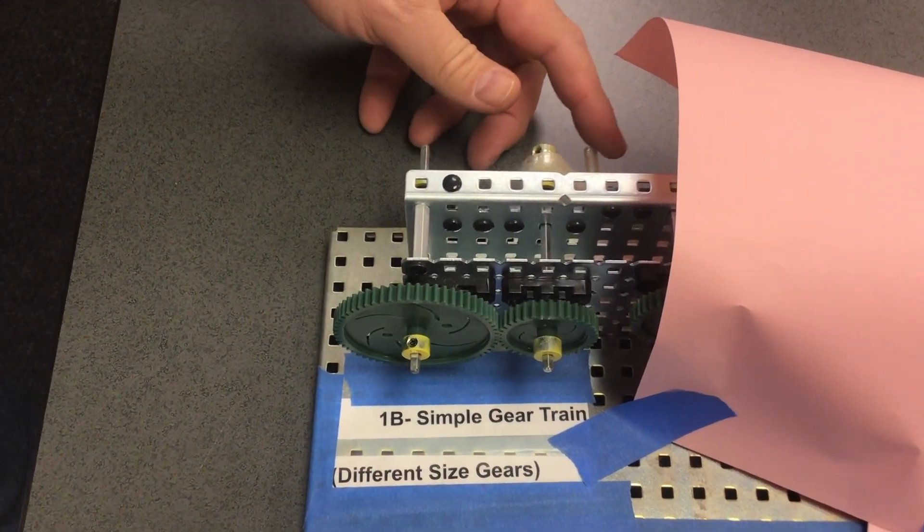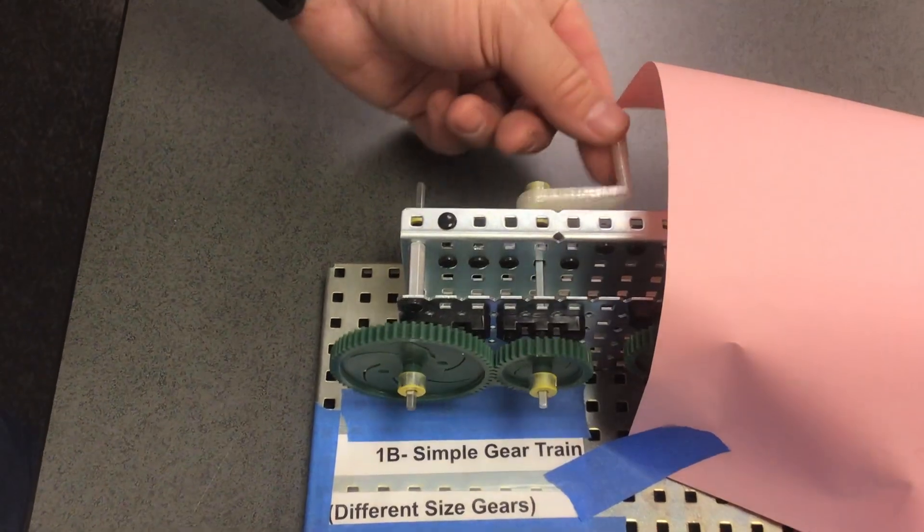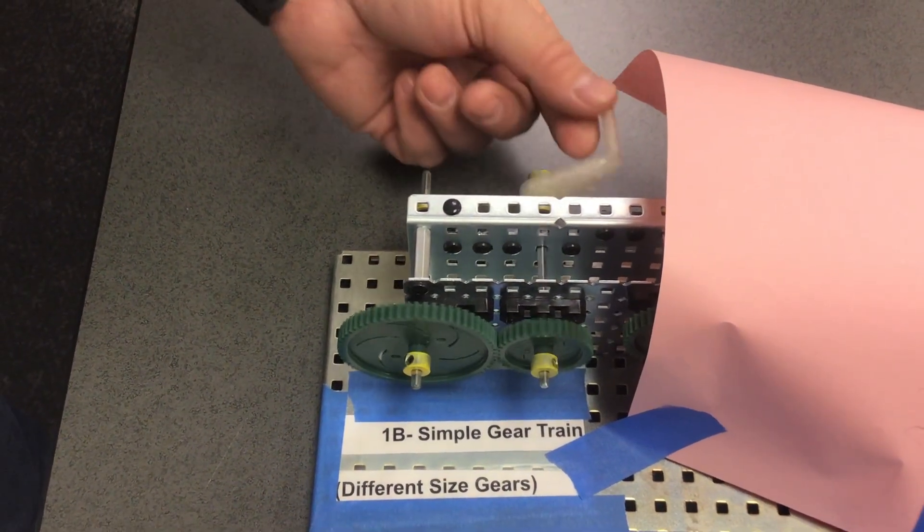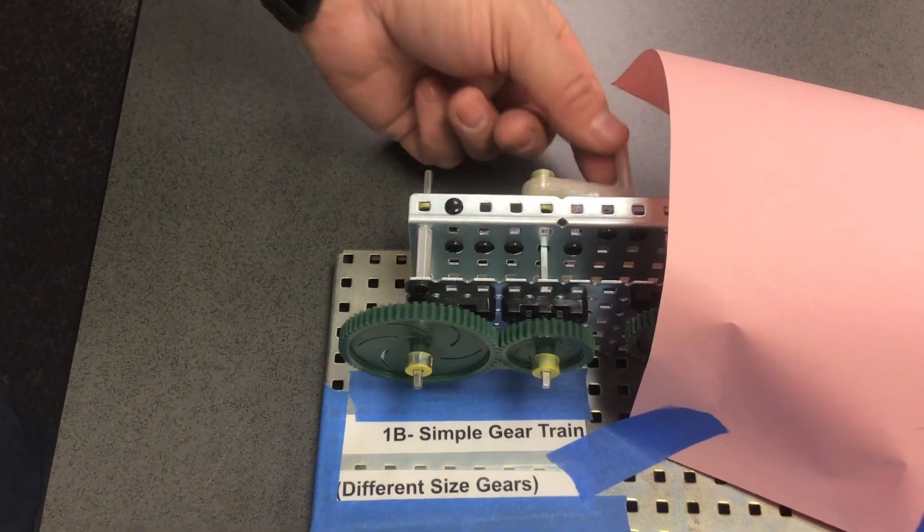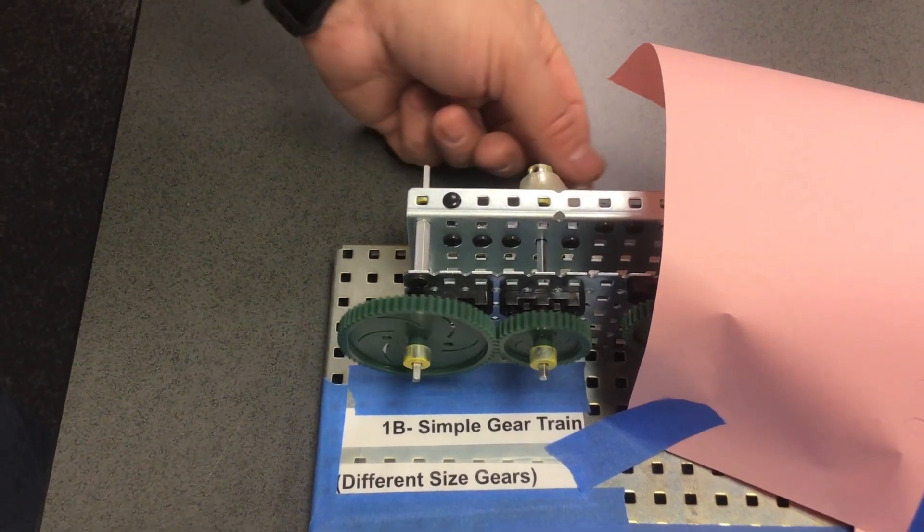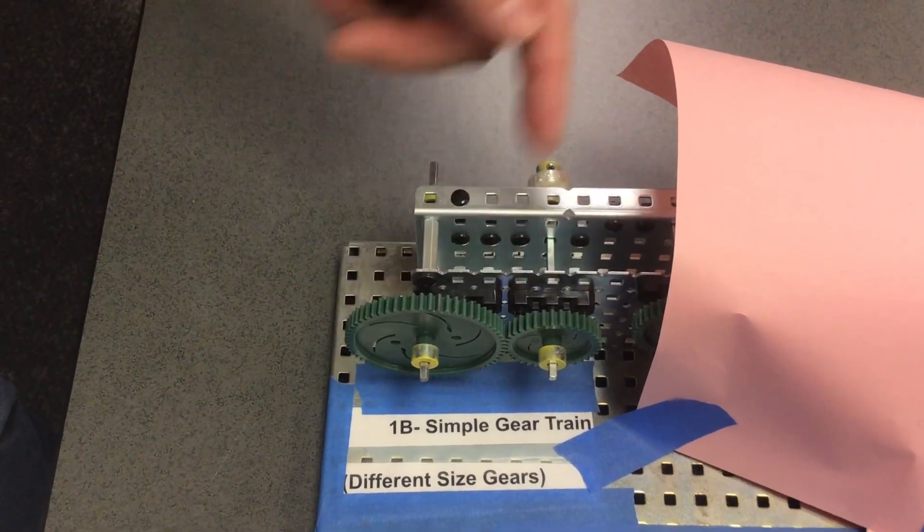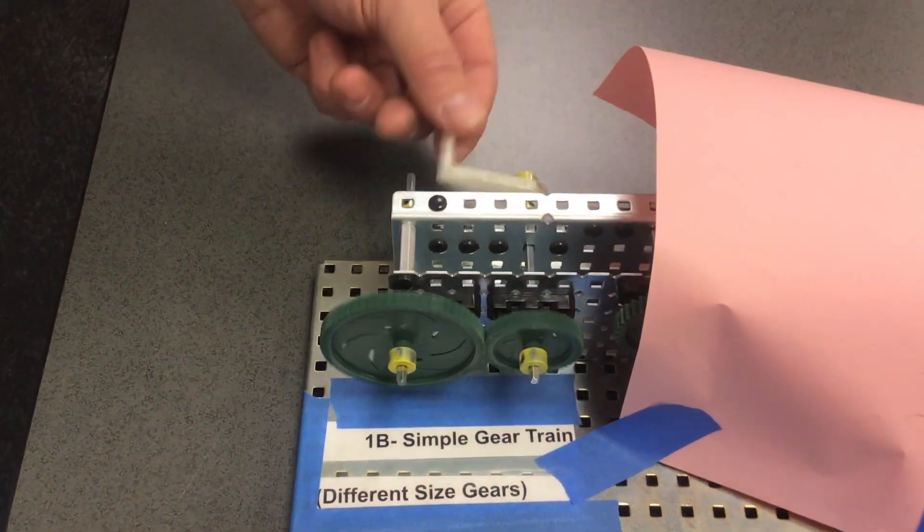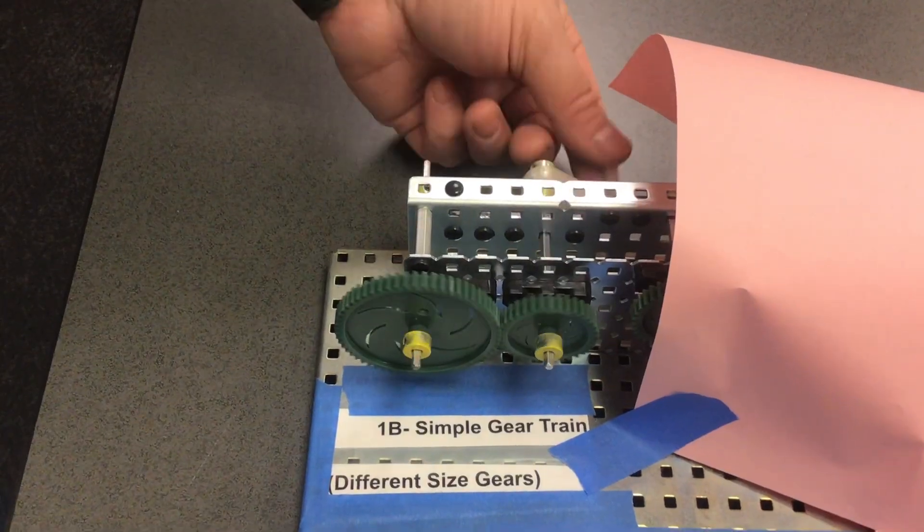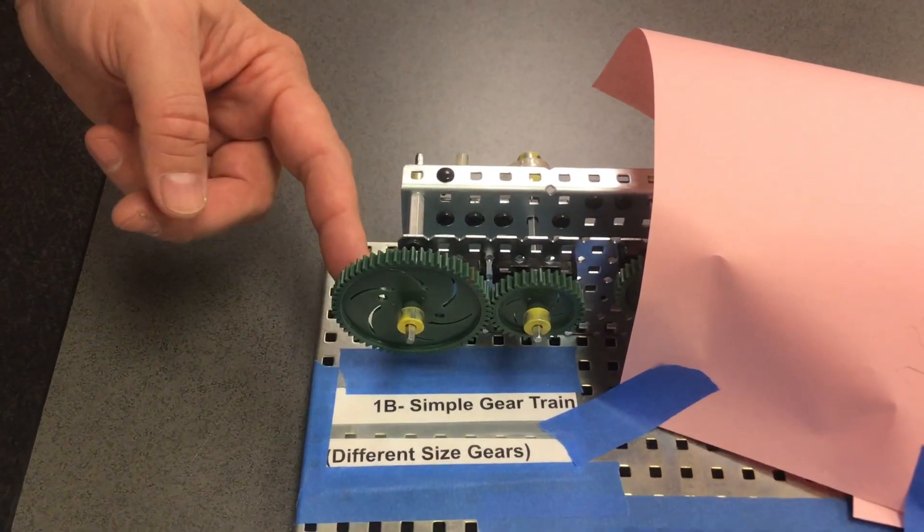This gear train has a hand crank attached to one of the gears, so that is the driver gear. The driver gear moves the driven or output gear. The input is the handle or crank providing the power, and the output is the other gear.